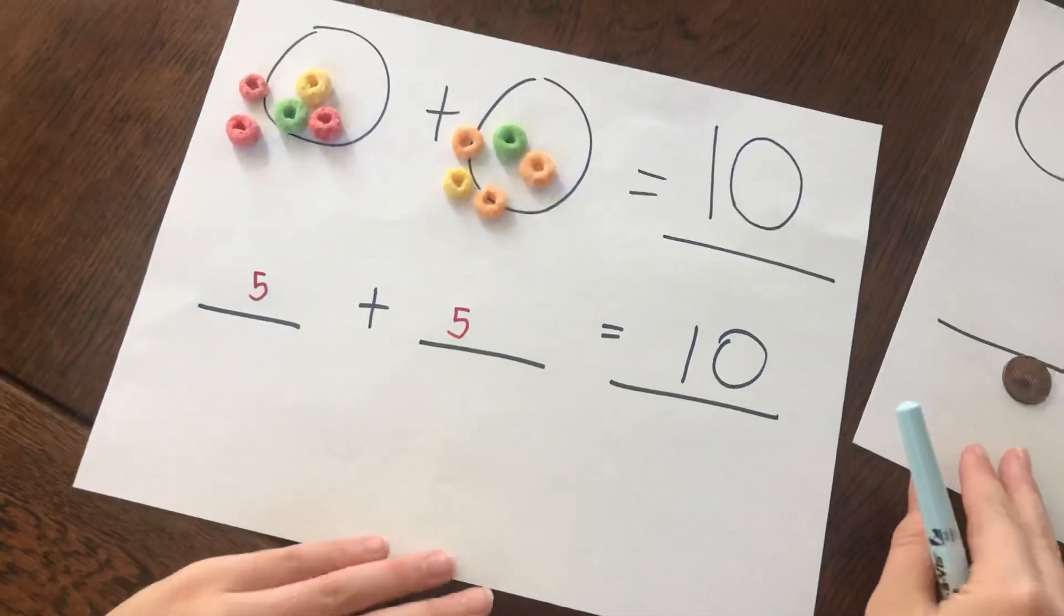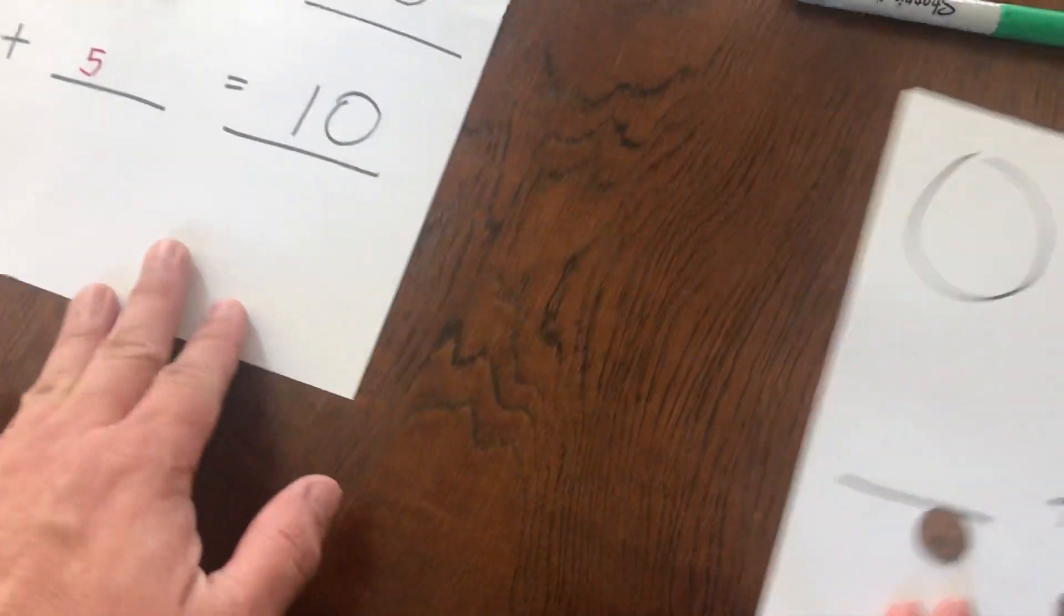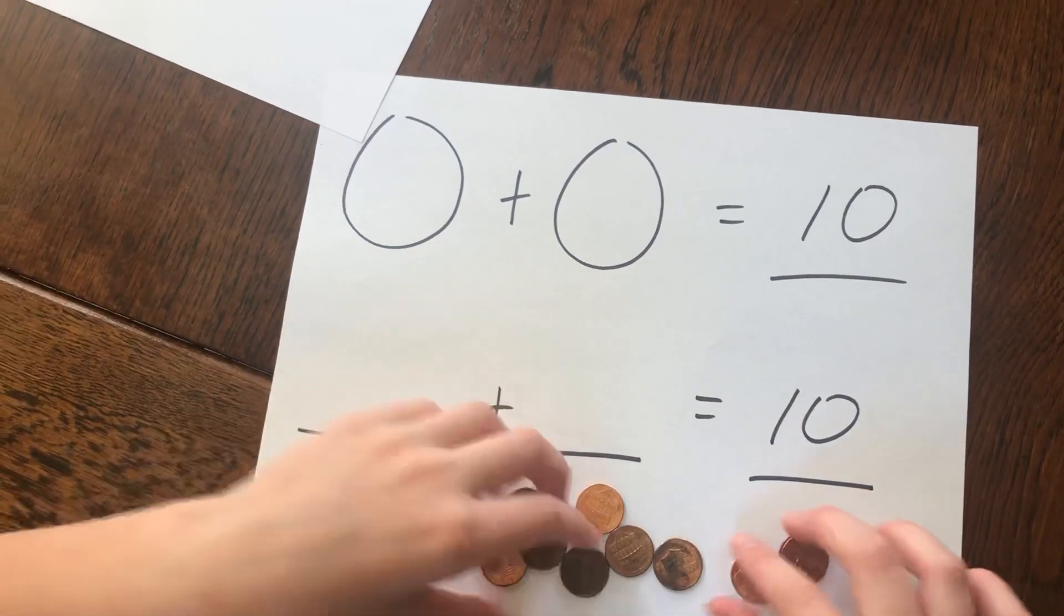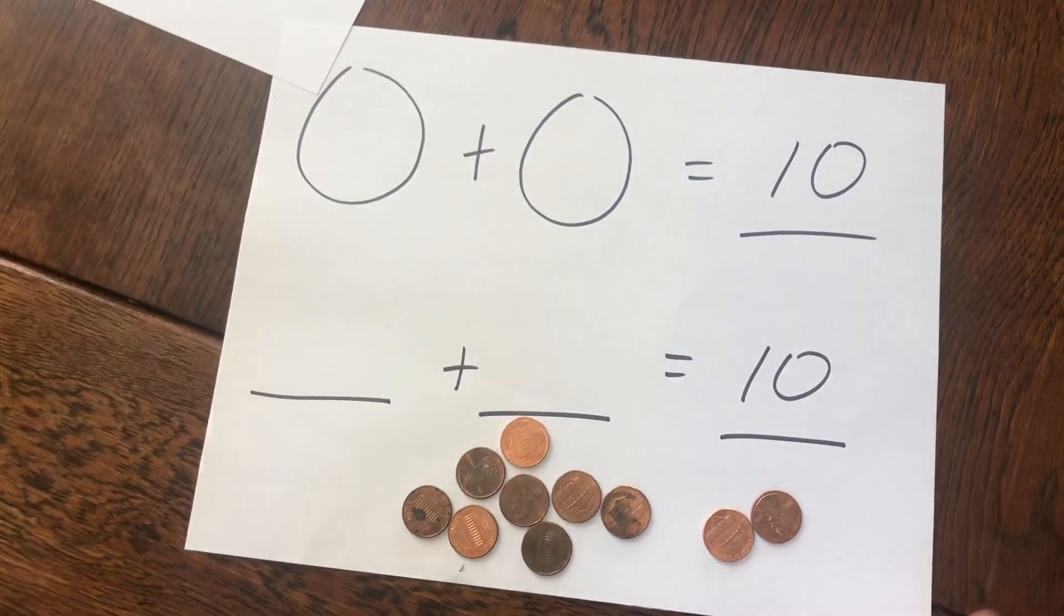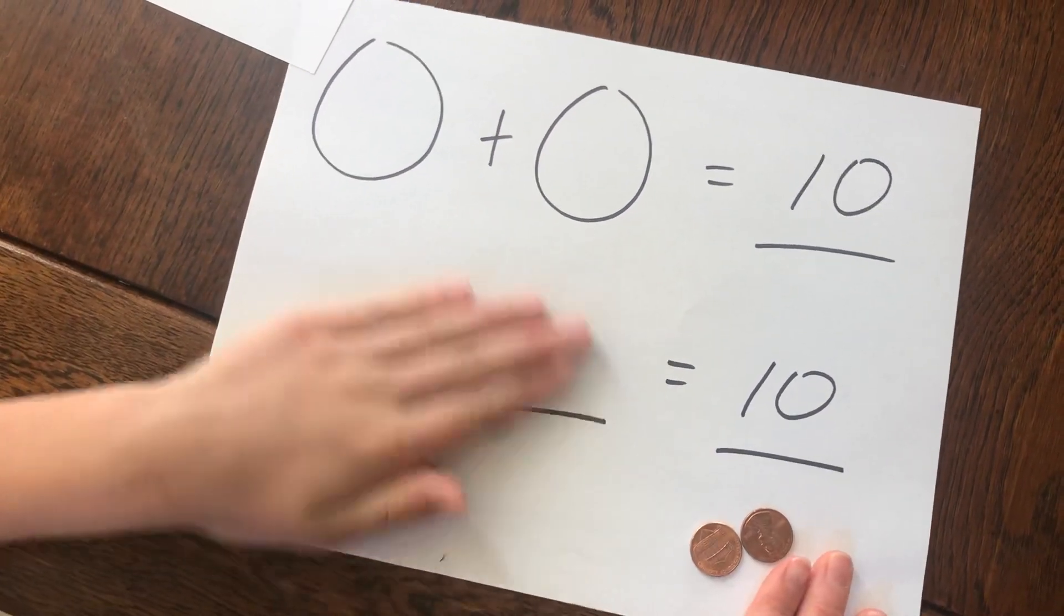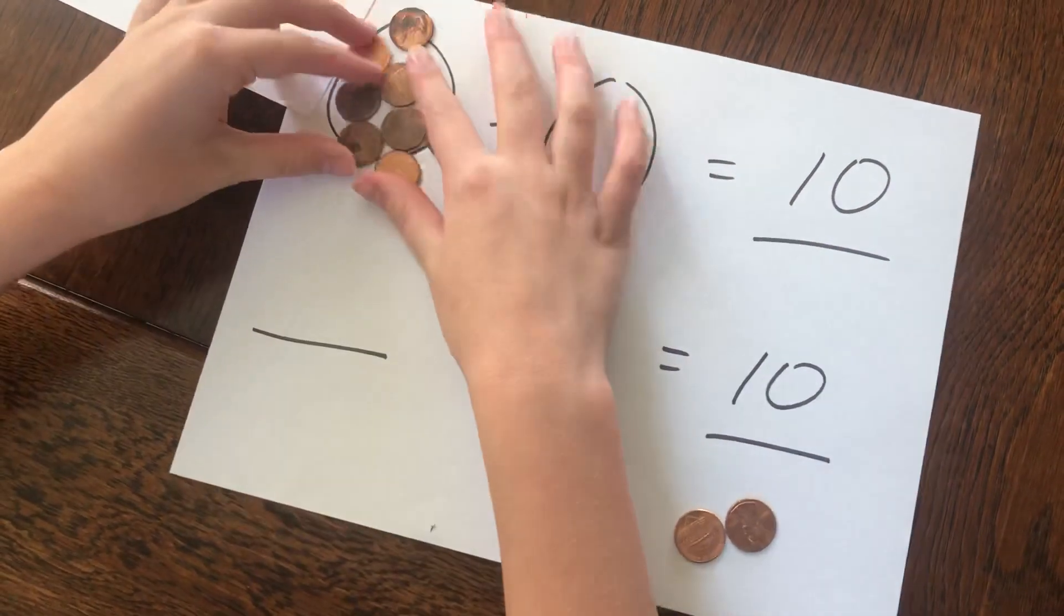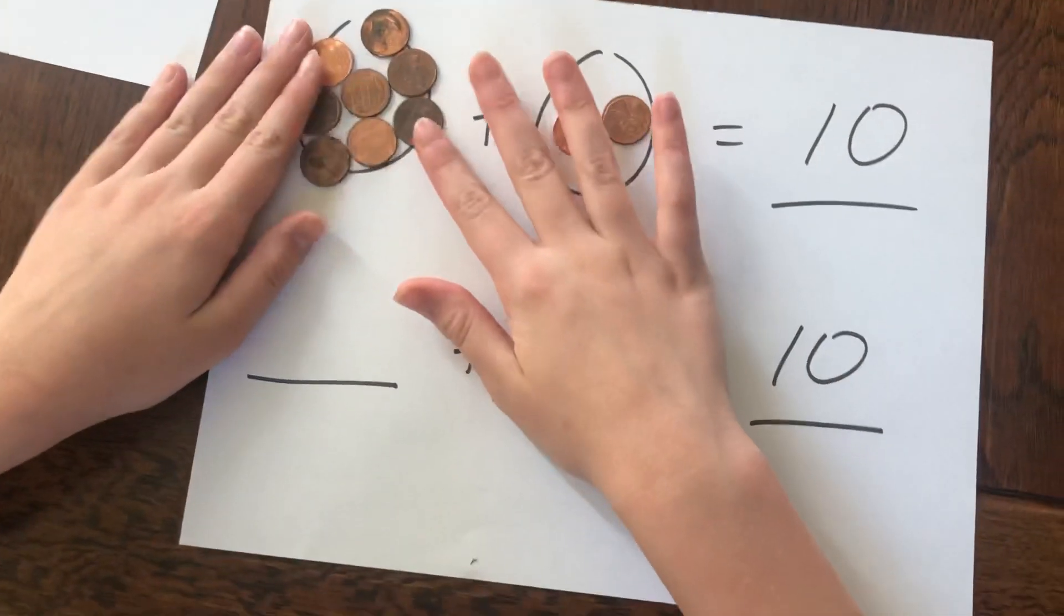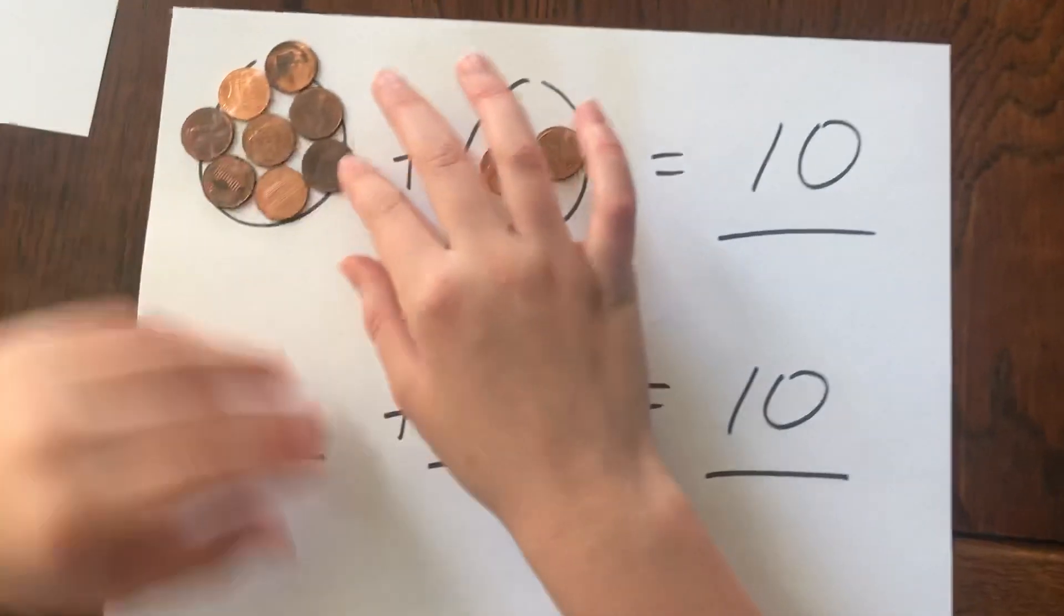But then it tells us to show two ways. So I'm going to do another one, but this one I'm going to do pennies. So I'm just going to take all these pennies and put them in this circle and these pennies in this circle. Because you know you have ten, right? Yep. Okay. So I'm going to count them down.